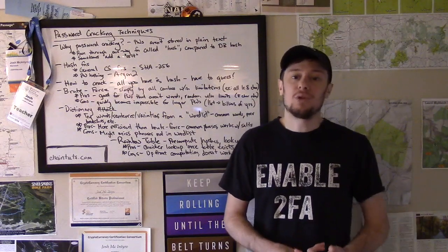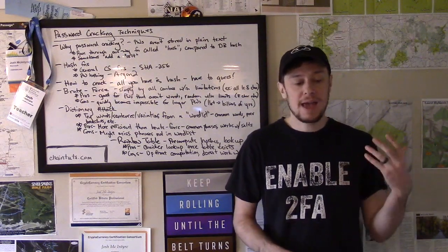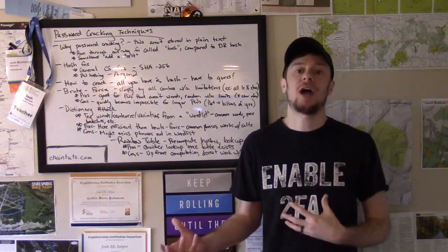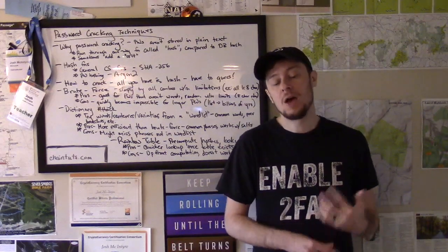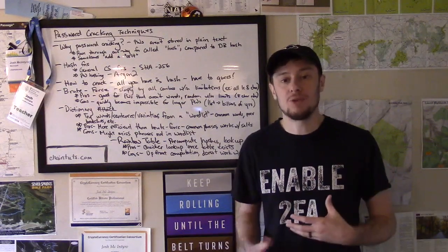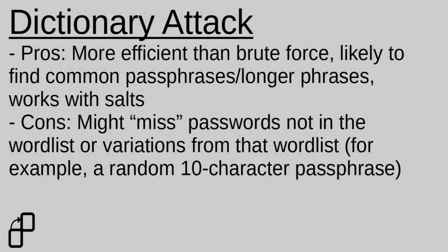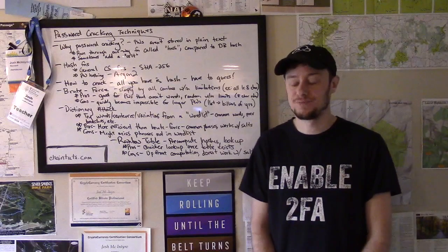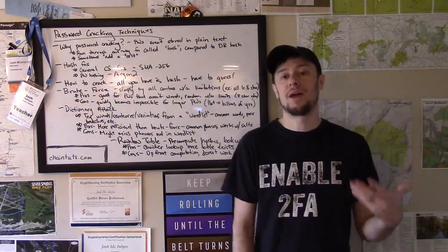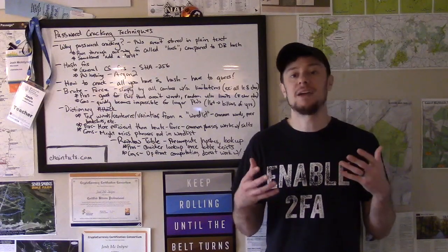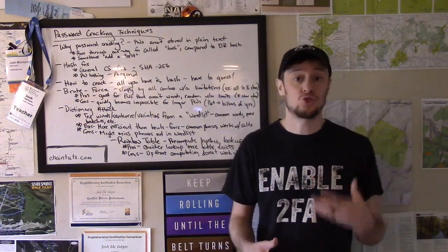A big problem with rainbow tables is they don't work well with salts. A salt, like we talked about earlier, will completely change the hash output for a given password. So you can't easily compute a rainbow table if salts are involved, because you have to recompute the table for every possible salt in that password database. That's why salts are an important tool in the security toolbox for developers — they prevent things like rainbow table attacks. However, rainbow tables can be great for running dictionary or brute force type attacks much more quickly if you don't have a salted scheme used to store your passwords.